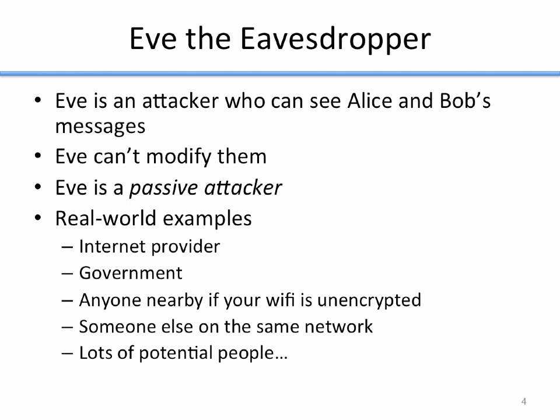Real world examples of people who could be Eve — not necessarily that they are — your internet provider could potentially just look at any internet traffic you generate. Most governments have the ability to look at internet traffic generated within their borders. Anyone nearby you, if you're using unencrypted Wi-Fi, someone else on the same network can do some work to make themselves into an eavesdropper on your connection. There are lots of potential ways that someone could view traffic that you're producing on the internet.